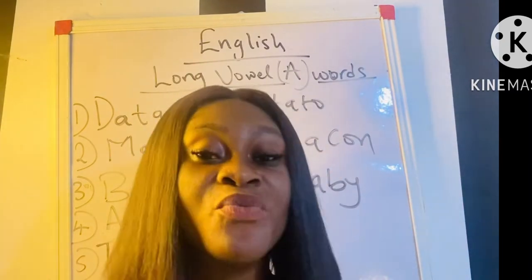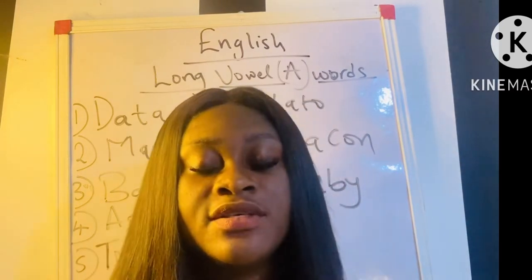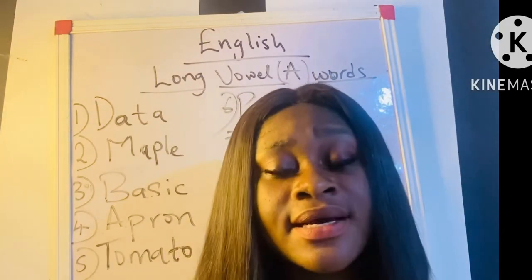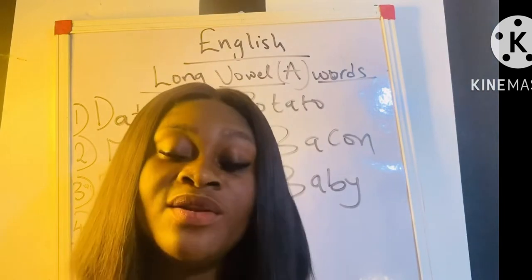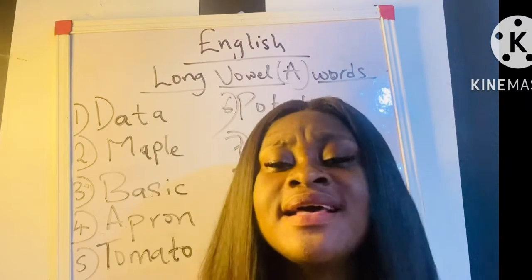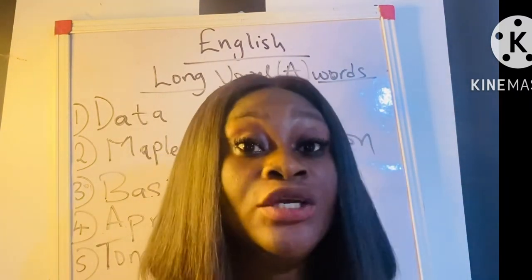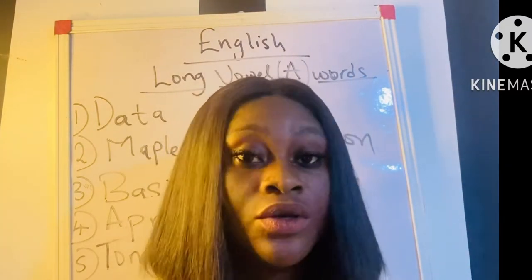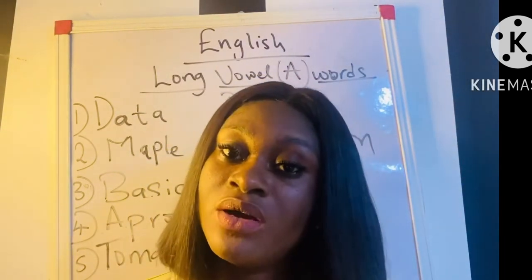We are adults and we will learn, because education is from cradle till death. Now, alphabets are 26 letters. Alphabets are split into two: we have vowel sounds and consonant sounds. The vowel sounds are what we've been talking about. The vowel sounds can either be short or long. If you check my last video you will see what we did there.